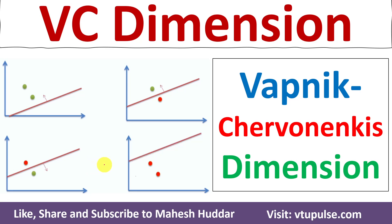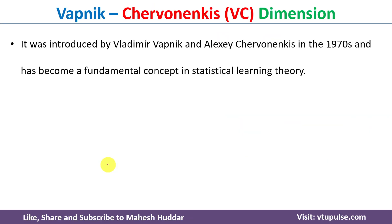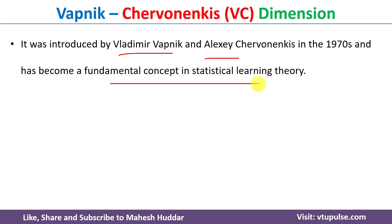Welcome back. In this video, I will discuss Vapnik-Chervonenkis dimension, i.e. VC dimension, in machine learning with the help of a simple example. VC dimension was introduced by Vladimir Vapnik and Alexei Chervonenkis in 1970 and it has become one of the fundamental concepts in statistical learning theory.